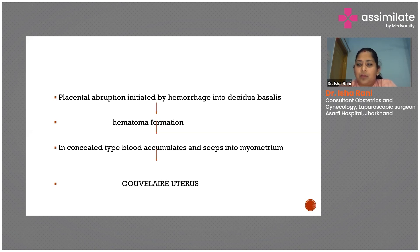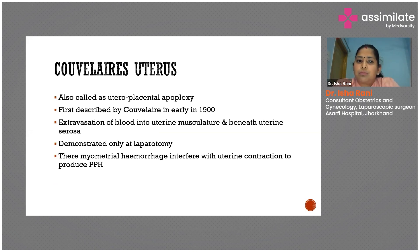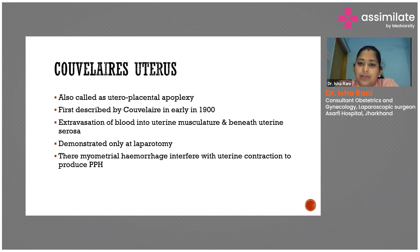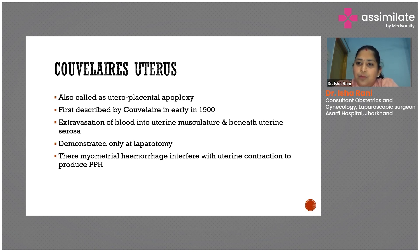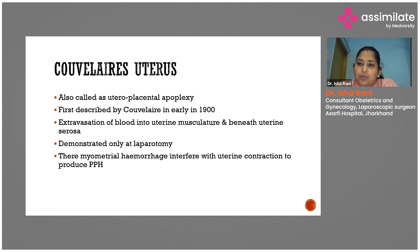Couvelaire uterus is mostly seen in the concealed type of abruption where there is hematoma formation and blood seeps into the myometrium. It is also called uteroplacental apoplexy. It was first described by Couvelaire in the early 1900s — there is extravasation of blood into the uterine musculature and beneath the uterine serosa. This diagnosis is only made during laparotomy, either during caesarean section or obstetric hysterectomy, where blue spots representing blood beneath the serosa and in the myometrium are visible.